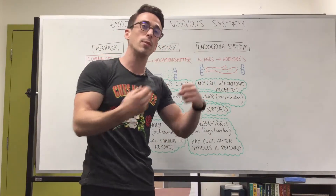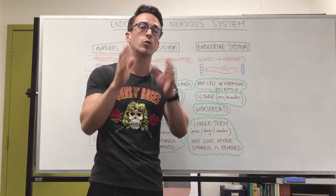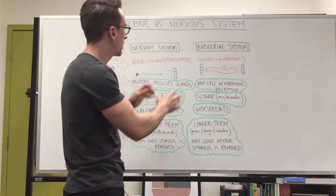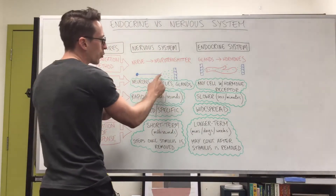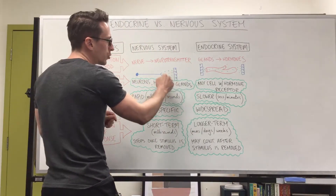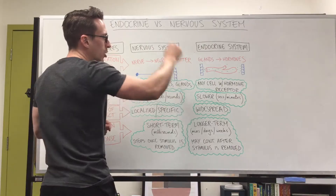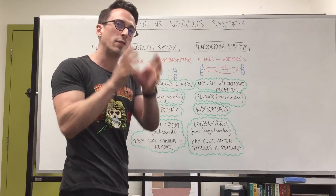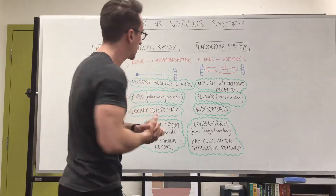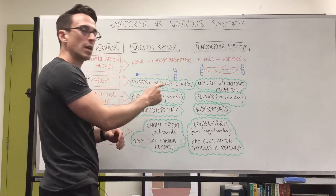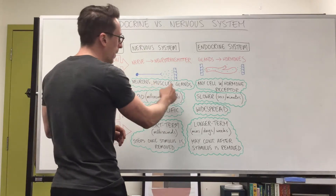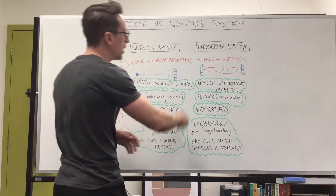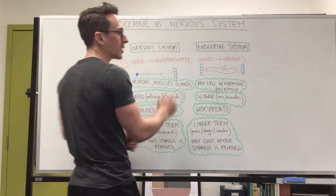These chemicals can be water soluble or fat soluble, and I'll talk about those in a future video. What I've got here is a neuron releasing its neurotransmitters to its target. What is the target for the nervous system? The target can be other neurons, muscles — to tell them to contract or inhibit contraction — or glands.